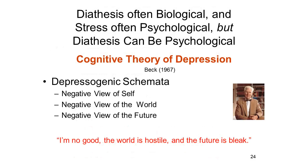So the stress factors implicated in the diathesis stress model can be biological in nature. And it turns out that the diathesis factors, for their part, can be psychological in nature. A good example of this can be found in the cognitive theory of depression proposed by Aaron Beck in 1967. Based on his clinical observations, Beck argued that depressed patients are characterized by a particular pattern of thinking, which he called depressogenic schemata.